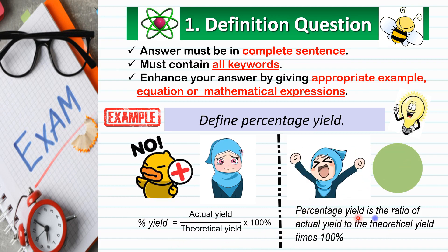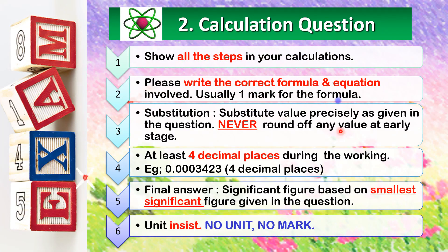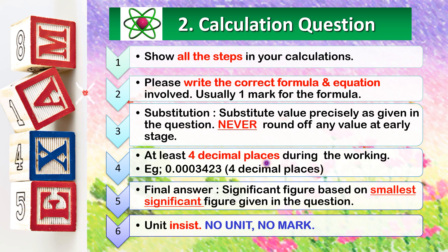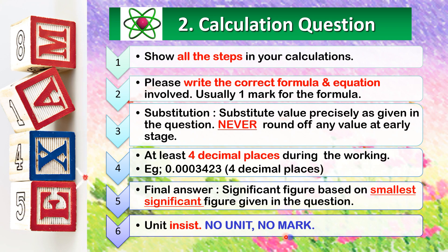For calculation questions, you must show all the steps in your calculations. Please write the correct formula and equation involved — usually one mark is given for the formula. Substitute values precisely as given in the question. Never round off any value at the early stage. Please use at least four decimal places during working. For the final answer, please use the smallest number of significant figures given in the question. Units are essential — please remember: no unit, no mark.